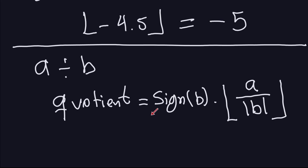Now, where is this formula coming from? There's a reason that it has to be like that — it has to be the sign of b times the floor of a divided by the absolute value of b. I'm not going to go over the details of why it has to be like that; to do that I would have to do a proof, which I'm not going to do. But let's just use it.